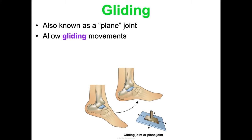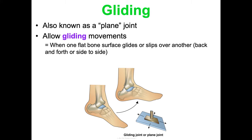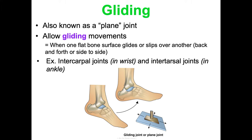The first synovial joint type is gliding joints, also called plane joints. They allow gliding movements — one flat bone surface glides or slips over another, back and forth or side to side. Think of waving your hand at the wrist — that's a gliding movement. Examples include the intercarpal joints in the wrist and the intertarsal joints in the ankle.